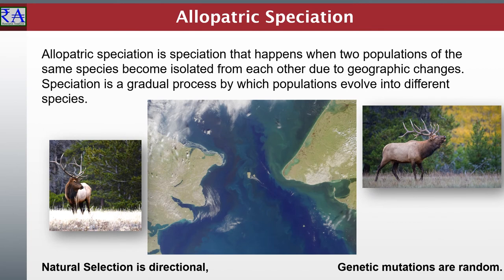In this example, a geographic change separated members of the elk populations into more than one group. Such changes could include the formation of a new mountain range, a new waterway, or the development of new canyons. Here we see how lush boreal forest ecosystems were flooded — it was a warming that connected the Arctic Ocean to the Pacific Ocean. Different gene mutations in each subpopulation occurred and built different solutions to similar restrictive environments. The different mutations and resultant genetic variations led to different characteristics between the separated populations. Allopatric speciation has occurred.